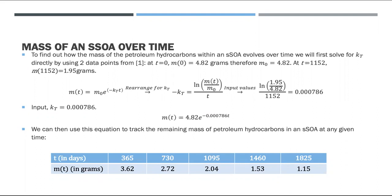Now to solve for the mass of these petroleum hydrocarbons in the buried SOAs, we need to solve for K_T, which would be the total decay rate. We do this by using two data points: the initial mass at time equals 0 days, and the final mass at time equals 1,152 days.